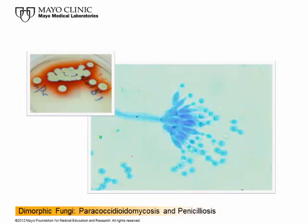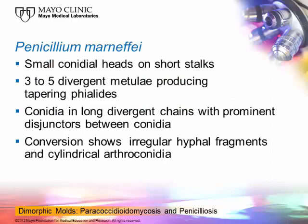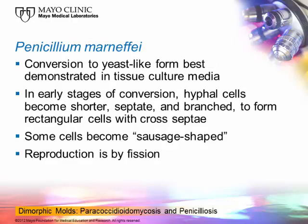Not all Penicillium cultures that are red are Penicillium marneffei. Most of the time you'll be able to make the identification by looking at a clinical specimen containing the organism. In terms of morphology, you'll see small conidial heads on short stalks with three to five divergent metulae — branches produced before the phialides that give rise to chains of conidia. The conidia are produced in long divergent chains with prominent disjunctures between them. On conversion using brain heart infusion broth, the hyphal cells become shorter, septate, and branched to form rectangular arthroconidia-like cells with a cross-septation in the middle, some looking sausage-shaped, reproducing by fission.